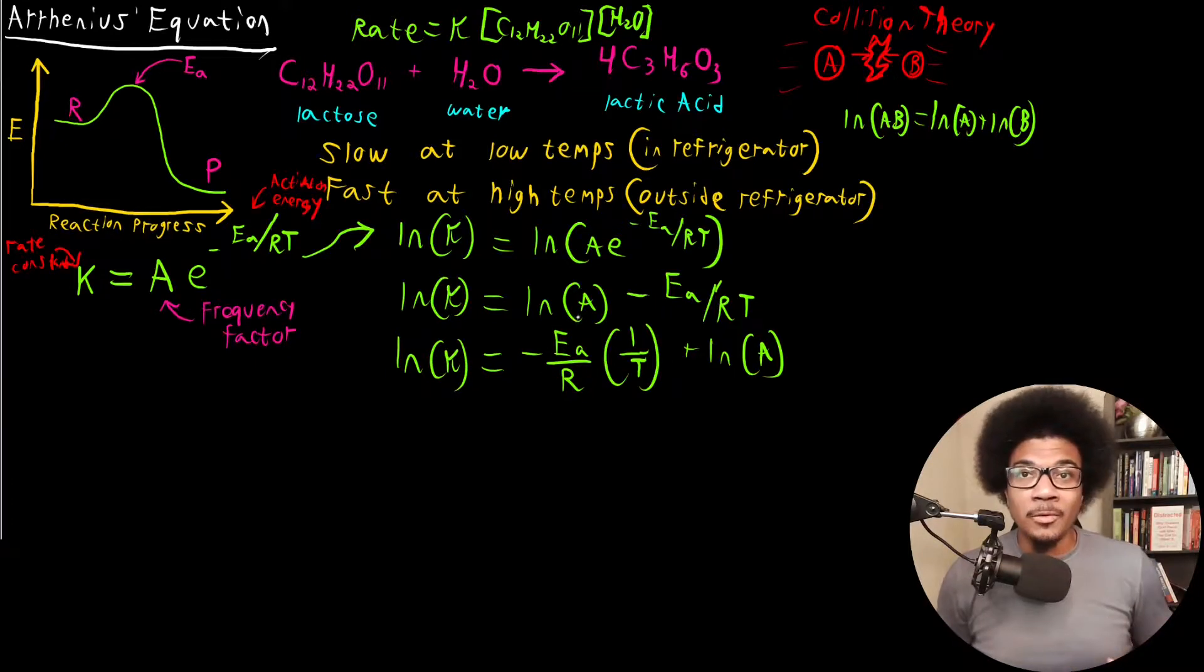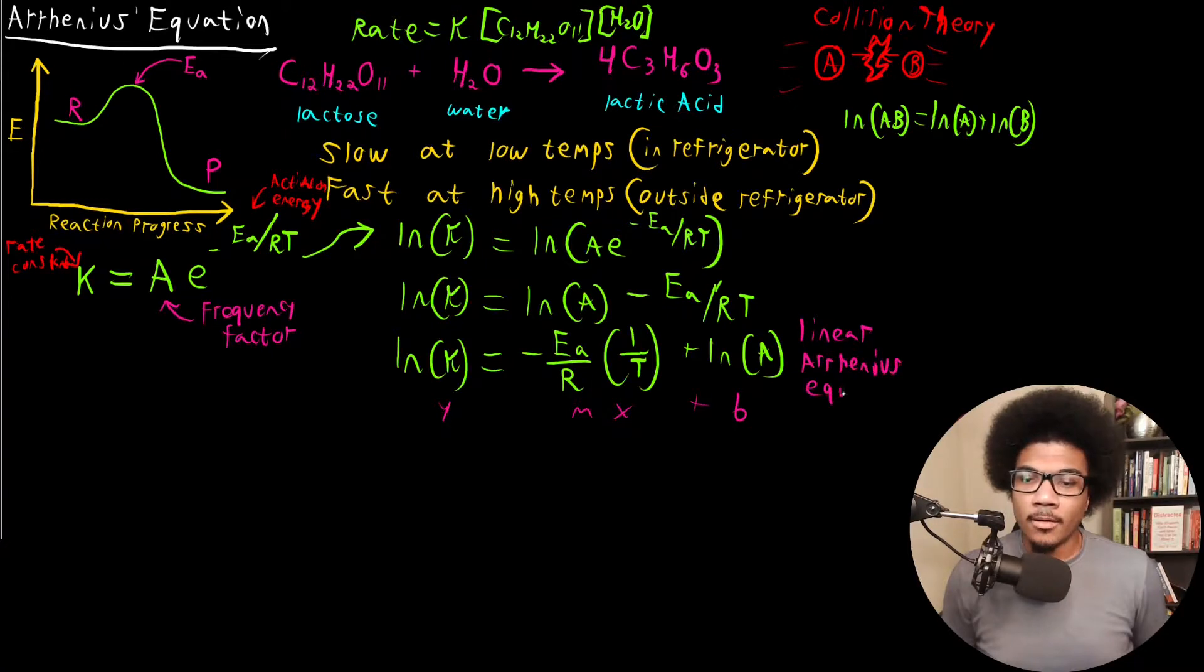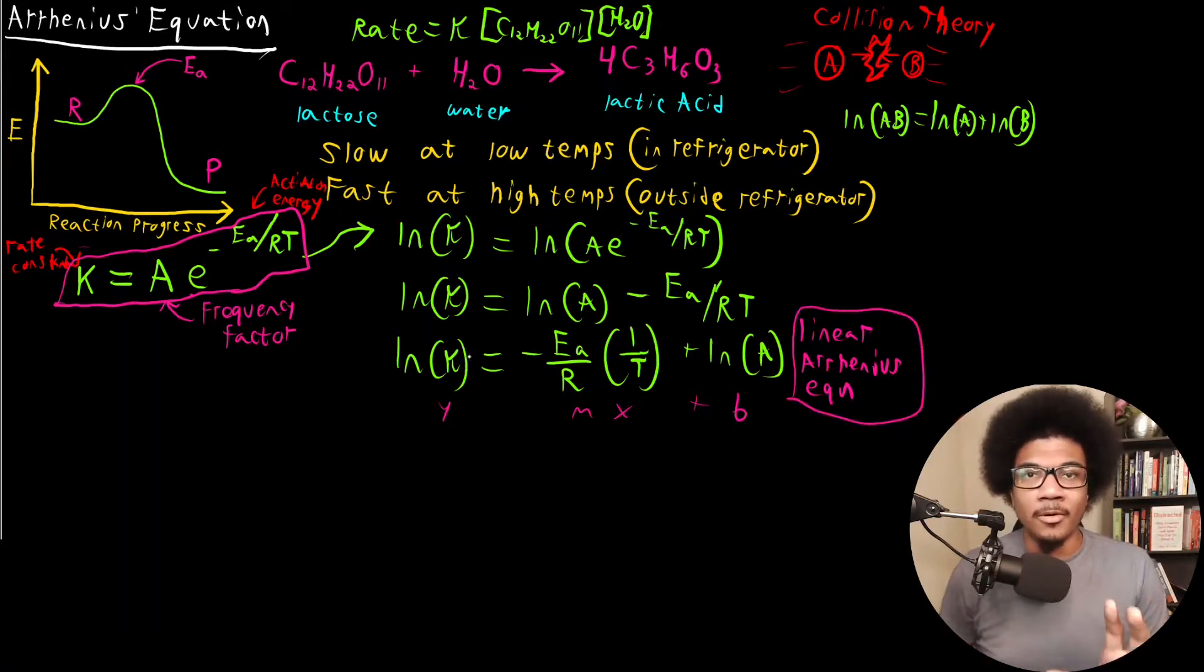Now, I wrote it this way to show you that this is the same form of a linear equation. We got Y equals MX plus B. So what this means is that if you were to plot the natural log of the rate constant with respect to the inverse of the temperature, you would get a linear relationship, which is always useful. We call this the linear Arrhenius equation. So this is the linear form of the Arrhenius equation. This is your traditional Arrhenius equation, and this is your linear form.